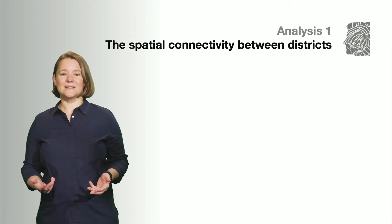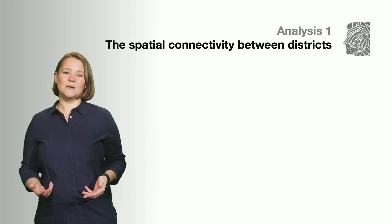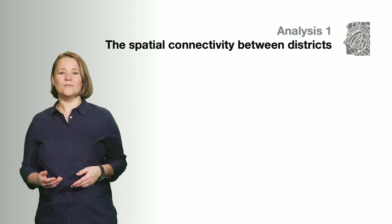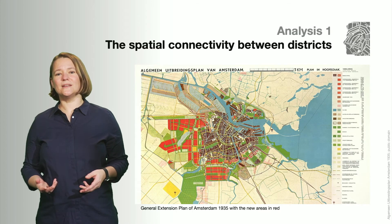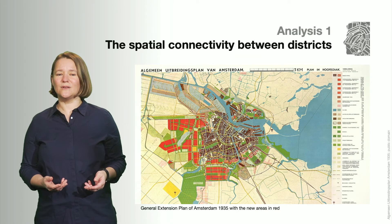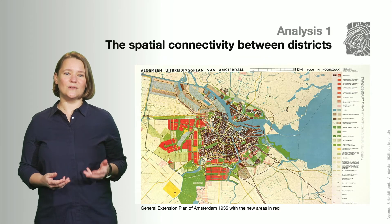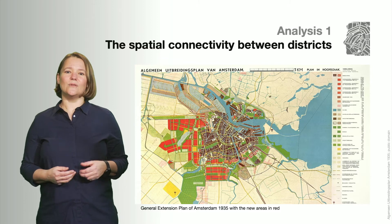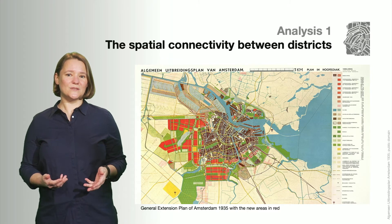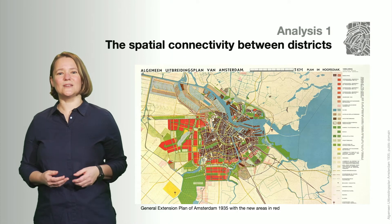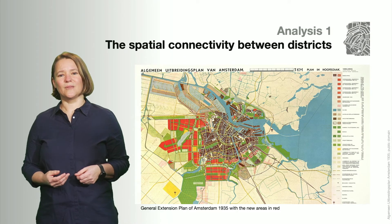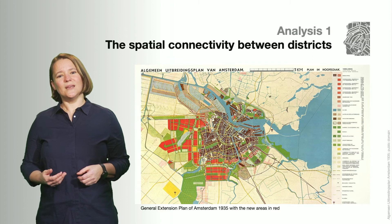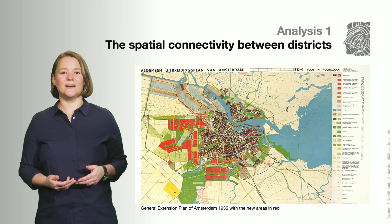As you could see in the last slides, Amsterdam grew in patches. One of the largest extensions, the General Extension Plan from 1935, was planned by the urban designers van Eesteren and van Lohausen. They were first appointed urban design professors at TU Delft and as such are predecessors of our urban design section in the architecture faculty. In their approach, they emphasized the relevance of urban design as a multiscalar discipline.